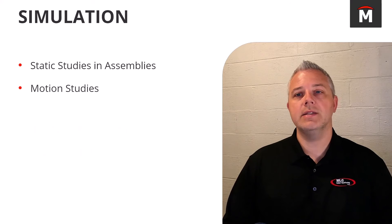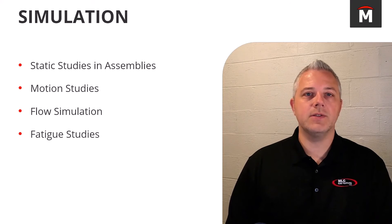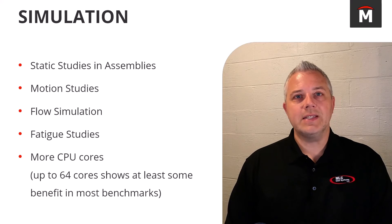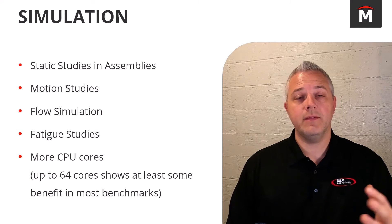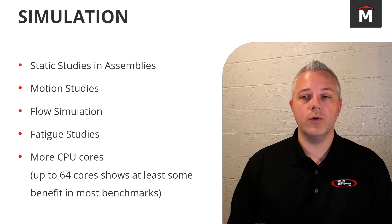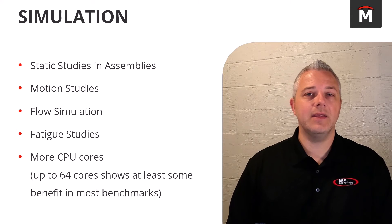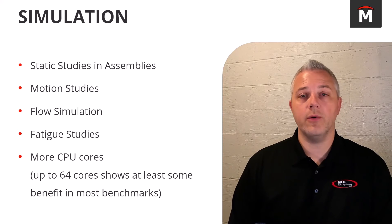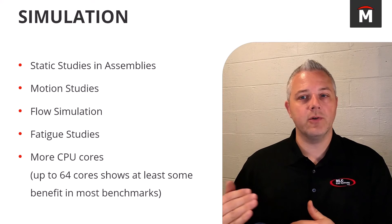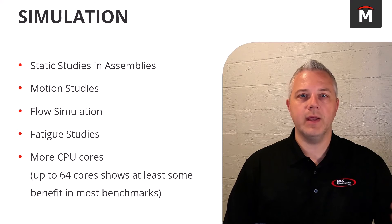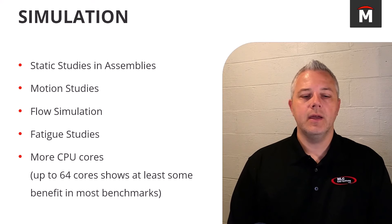Rendering and simulation are similar in that it's very hard to get good benchmarks because the parts or assemblies you're working on can be so different. When it comes to simulation — static studies, motion studies, flow sim, fatigue studies — these are typically going to benefit most from having additional CPU cores. I've seen benchmarks indicating you can see a benefit all the way up to 64 cores with SolidWorks simulation, and one report suggested solve time continues to drop all the way up to 128 cores, though there are some conflicting reports on that. I would say up to 64 cores you're probably going to continue to see improvement with each core increase.